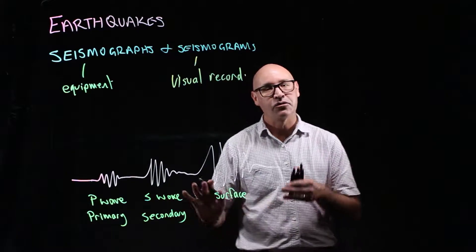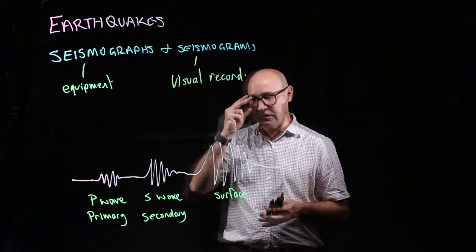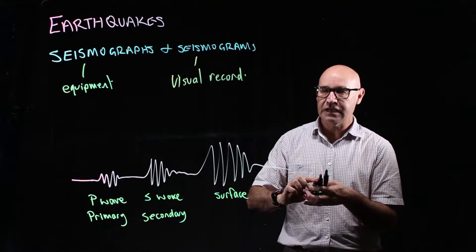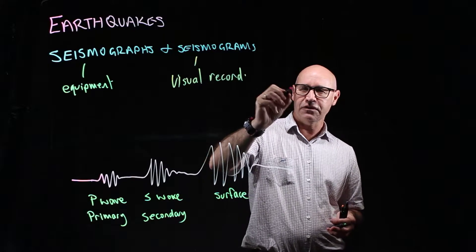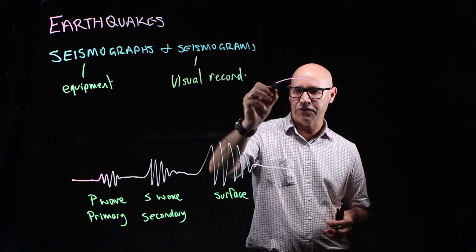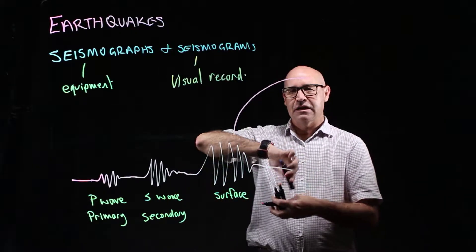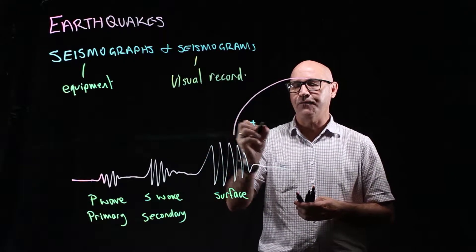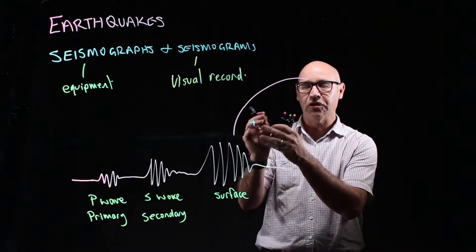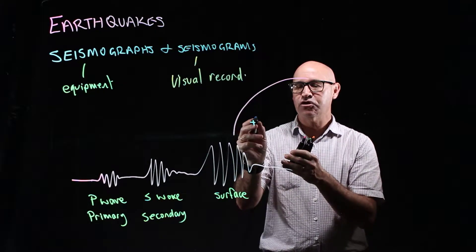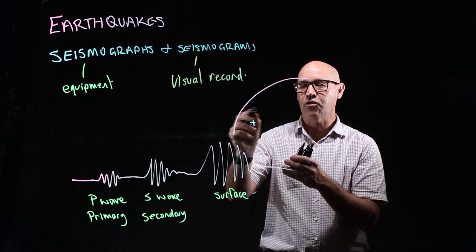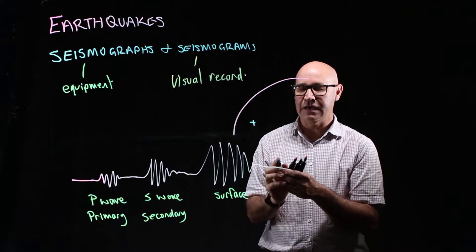Now, the reason these are differentiated is because, if you imagine, here's the Earth, the curvature of the Earth. And let's say, here's the focus of the seismic event. And of course, shock waves are going to go out in all directions from here.